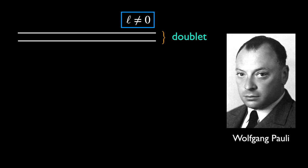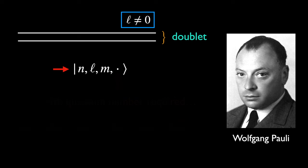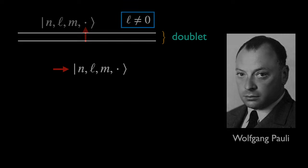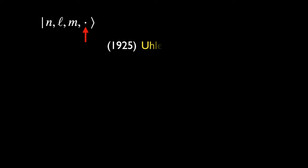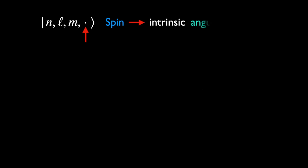Pauli suggested that this doubling, which cannot be accounted for by the quantum numbers n, l, m, must be due to a fourth quantum number — which he called a 'two-valuedness not describable classically.' Note that the quantum number m cannot account for the different energies due to rotational invariance and is irrelevant to this problem. In 1925, two physicists, Uhlenbeck and Goudsmit, proposed that this observable could be a new form of angular momentum associated with the rotation of the electron about its own axis — in other words, its spin. This was a reasonable guess, since much of the multiplicity of energy levels in atoms could be explained by orbital angular momentum, so spin could be viewed as an intrinsic form of angular momentum.